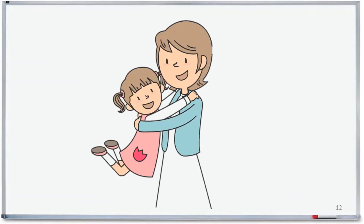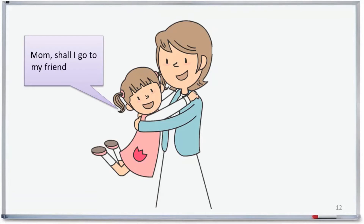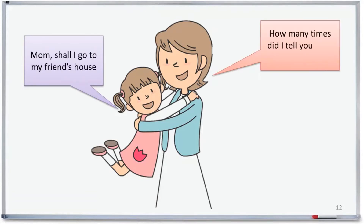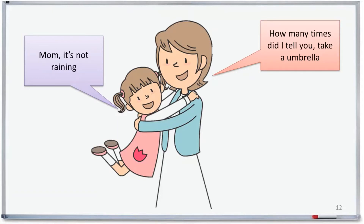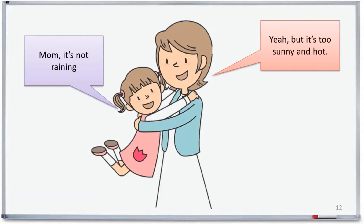This is the example I am going to take. It is a conversation between a daughter and mother. The daughter wants to go to her friend's place, for which the mother says to take an umbrella. The daughter asks the mother that anyhow it is not raining, what is the need of taking an umbrella, for which the mother says it is too hot and sunny. Finally, the daughter agrees to take the umbrella.